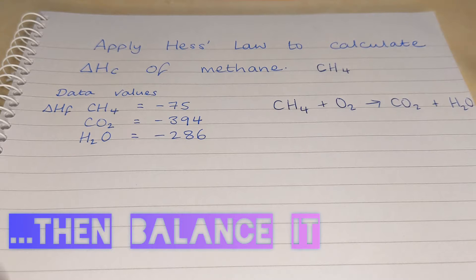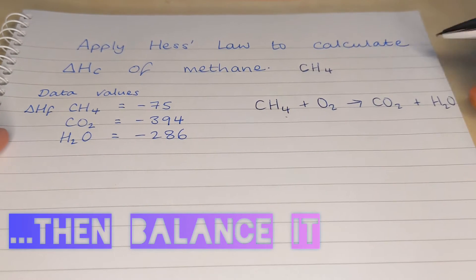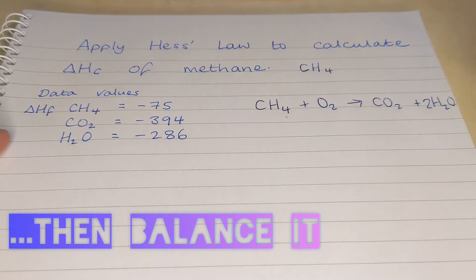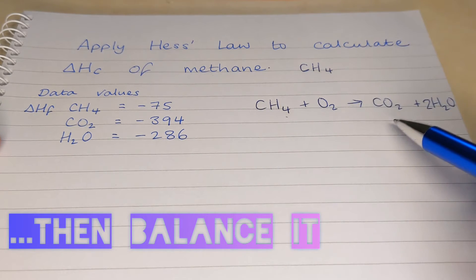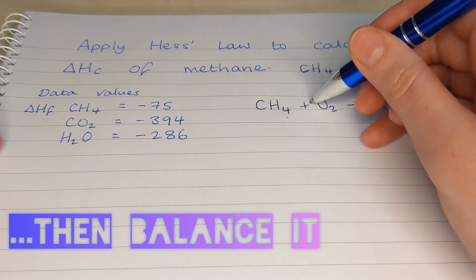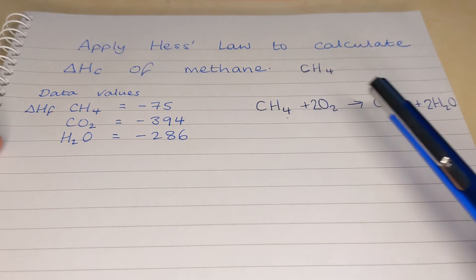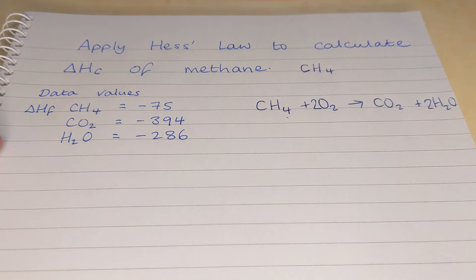Now this is unbalanced. We've got four hydrogens on the left, two on the right. So we put a big two here. Now we've got four hydrogens there. That's fine. Let's count the oxygens. Two, three, four, two on the left. So let's put a big two there. So now we've got four oxygens on the left, four on the right and we are balanced.